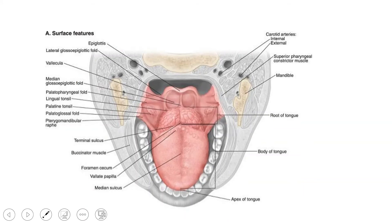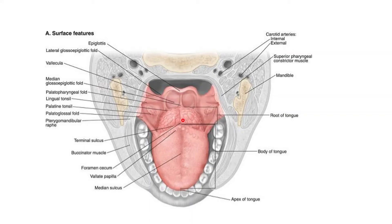This is the atlas view where we can visualize the dorsum of the tongue. The posterior one third of the dorsum of the tongue is occupied by the lingual tonsil, which makes up the floor of Waldeyer's ring.